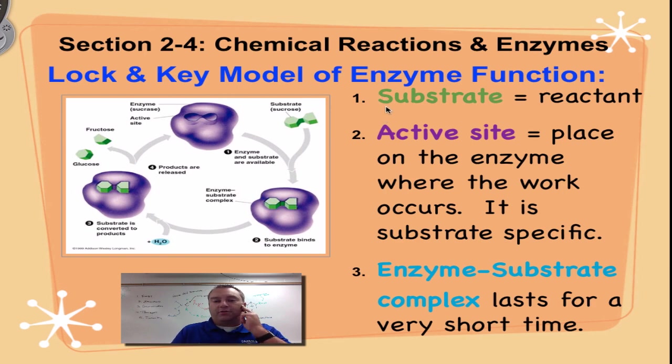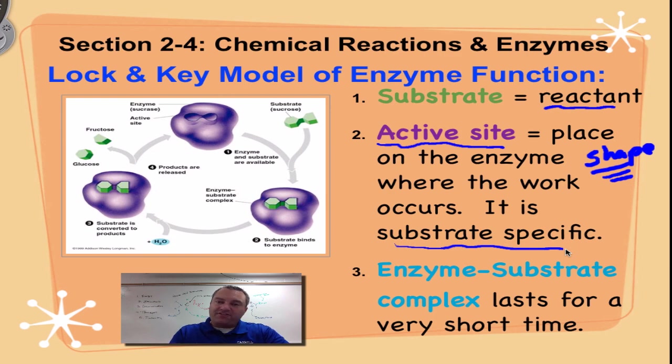We've got some important vocab words, and these are ones in color. We have the substrate. A substrate is a reactant. So remember, that's anything that's to the left of an arrow in a chemical equation. We have an active site. The active site is the place on the enzyme where the work is going to occur. The shape of the active site is really important because it's very specific. If the substrate does not fit in the active site, nothing's going to happen.